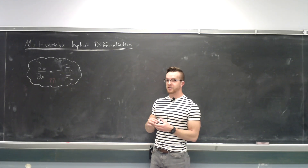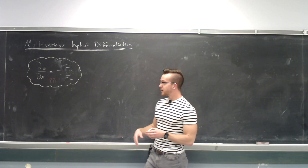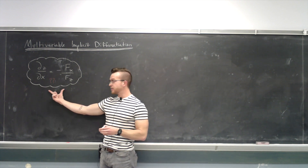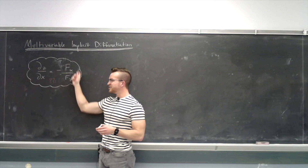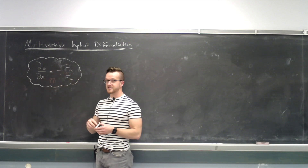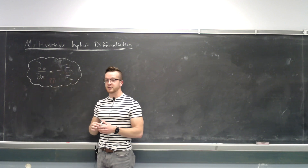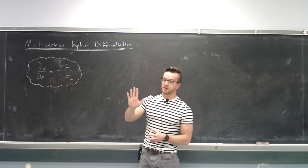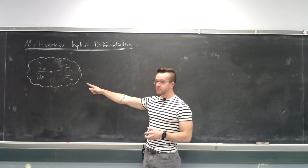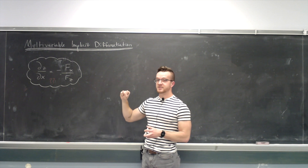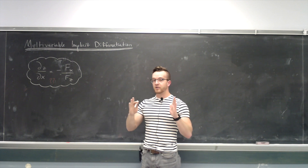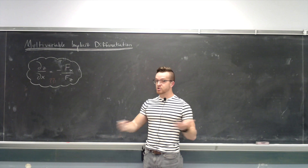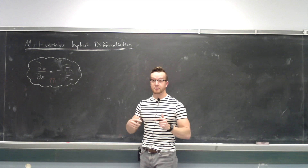If you've taken a multivariable calculus class, you've probably learned about implicit differentiation in the multivariable context, and you've probably seen a formula like this. It might be a little weird and confusing, and I'm going to explain where this comes from. The summary of the video is it's nothing new — the formula is just there to scare you. Just like in the one variable case, implicit differentiation is just the chain rule. Nothing new.